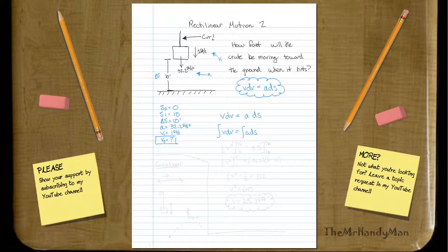Should have 1 half v squared, and this will be v2, v1, equals a, and then you have s, which is going to be between s2 and s1.